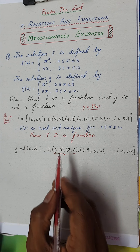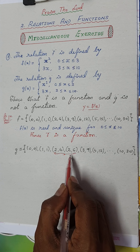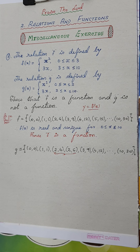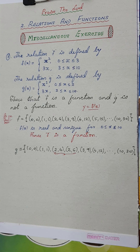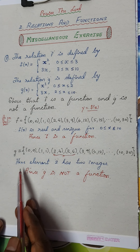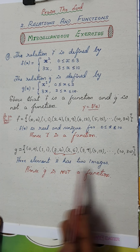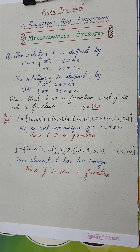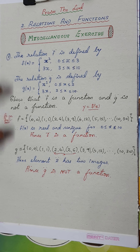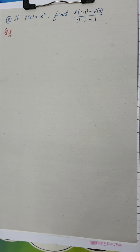The problem is that element 2 has two images — 4 and 6 — which is not valid for a function. One element cannot have two images. So this relation cannot be treated as a function. The conclusion: element 2 has two images, hence g is not a function — it is just a relation. The solution looks complicated but is actually very simple.